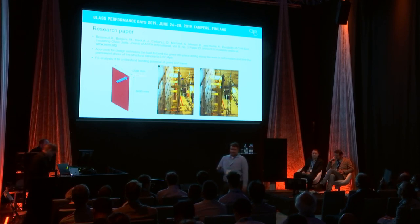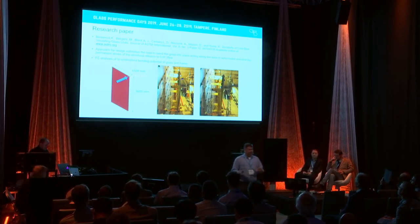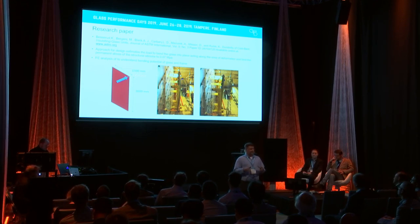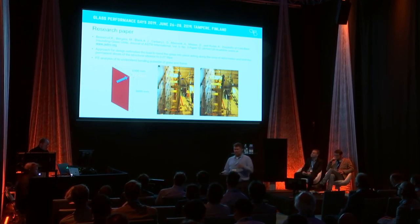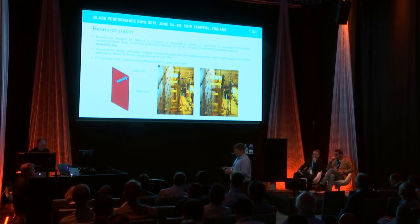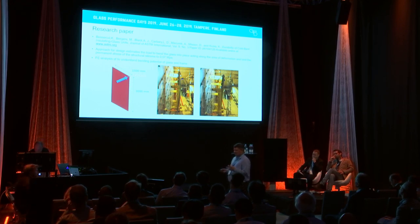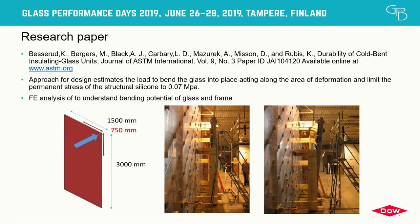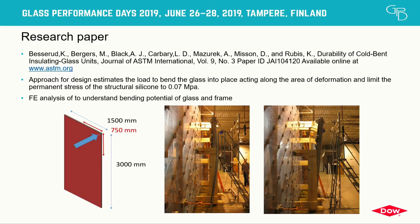Interestingly, FE was used in the project but not necessarily for what's happening to the sealant — it was used for glass stress distribution. For the sealant, it was just a mechanical determination: how much load does it take to bend this light of glass into place? That load was limited to 0.07 megapascal or 1 psi, which is a typical recommendation by sealant manufacturers for the allowable stress for a permanent or dead load.